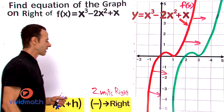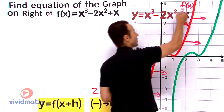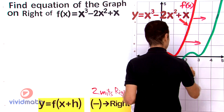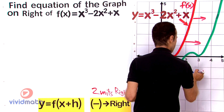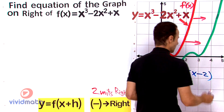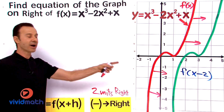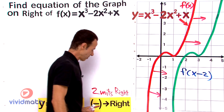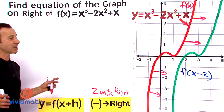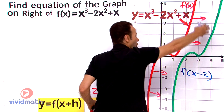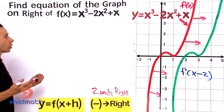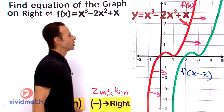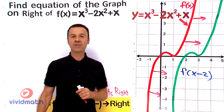So what does that mean for how the function is written? Well, if f(x) is our original, and because it's to the right we use a minus sign, this function is going to be f(x minus 2). Remember, minus means moving to the right. We've established it's f(x minus 2), so now all we have to do is substitute x minus 2 into the original equation, simplify it, and we'll have the new equation for the green function on the right.